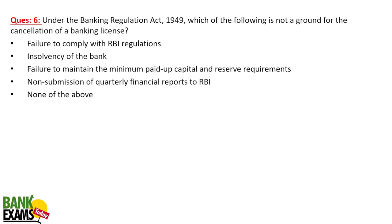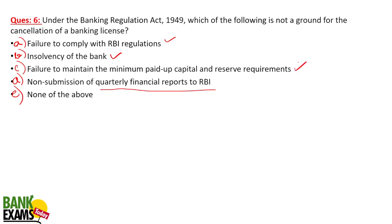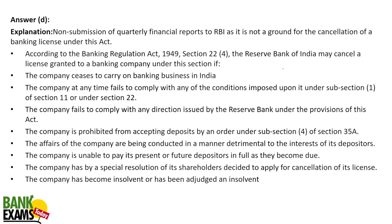Question 6: Under the Banking Regulation Act, which of the following is NOT a ground for cancellation of a banking license? The options are: failure to comply with RBI guidelines, insolvency of the bank, failure to maintain minimum paid-up capital, and submission of quarterly financial reports. Non-submission of quarterly returns is not a ground for license cancellation. Insolvency, failure to comply with RBI guidelines, and failure to maintain paid-up capital or reserve requirements — these are valid grounds.